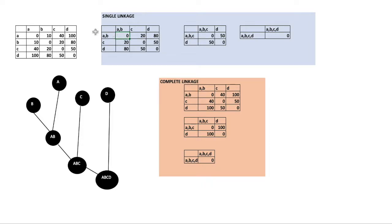From A to C the distance is 40 and from B to C the distance is 20. So the minimum distance is from B to C, which is 20. We write 20. From A to D is 100 and B to D is 80, so we're going to write 80.